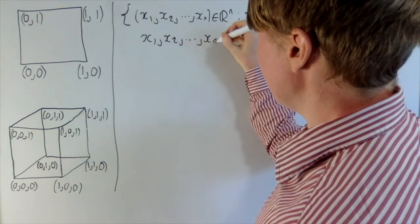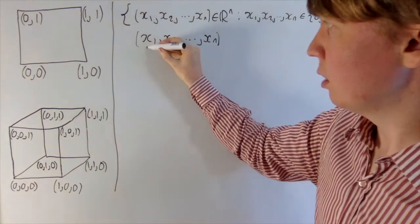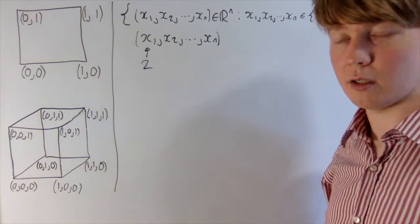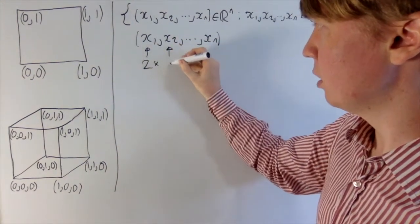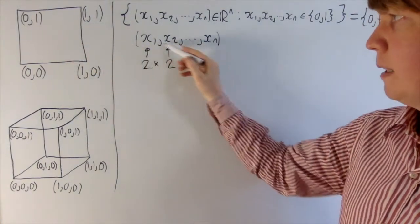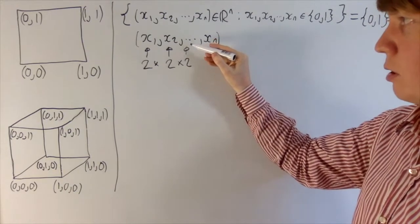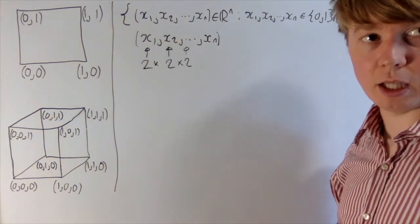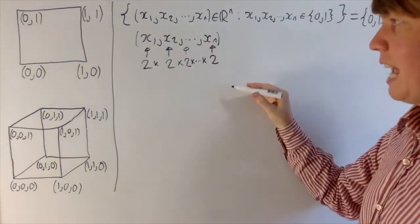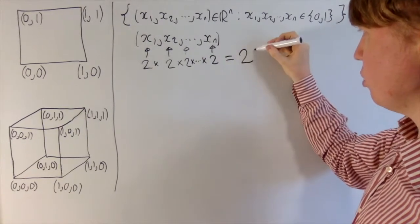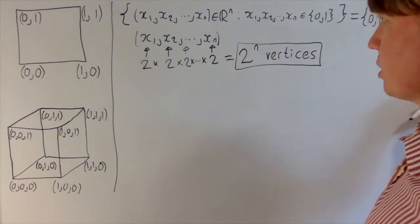If we think about how many different combinations there are for a general point on a hypercube: your first coordinate entry can be 0 or 1, so there are two possibilities. Once you've picked, there are another two possibilities for the next one — so that's four options. For x3, multiply by 2 again, giving eight options. Then for x4, multiply by 2 again, and so on, multiplying by 2 each time until you've multiplied by 2 for the n-th time. This gives us 2 to the power of n vertices.